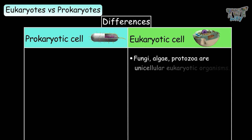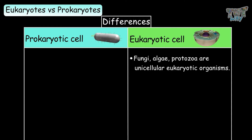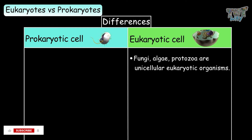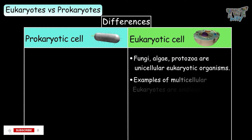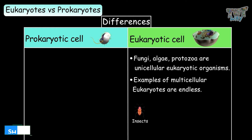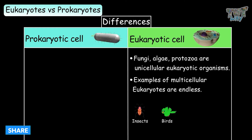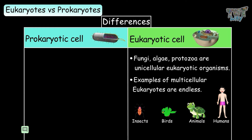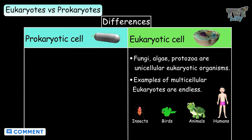Fungi, algae, and protozoa are unicellular eukaryotic organisms. And examples of multicellular eukaryotes are endless — all types of insects, birds, animals, and even humans are all eukaryotes. They all have eukaryotic cells.